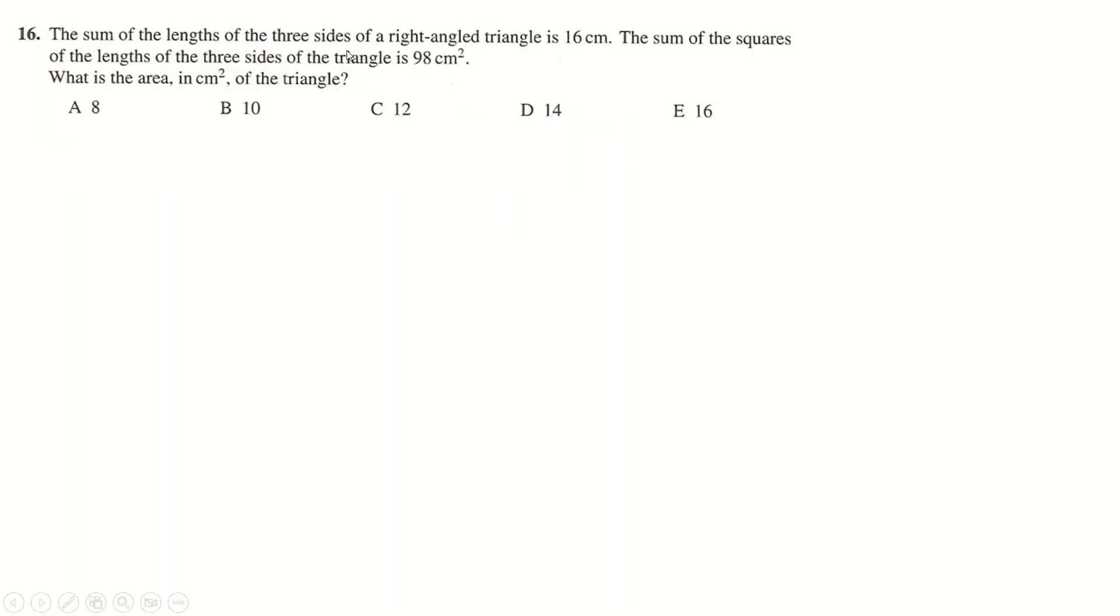Question number 16. We've got a right angle triangle where the perimeter is 16. And the sum of the squares of three sides, so a squared plus b squared plus c squared is 98. Now this is a right angle triangle, right? So a squared plus b squared is c squared, which means I can replace this a squared plus b squared with just c squared. To get 2c squared is 98, divided by 2 square root, and c is 7. Replace that in here to get a plus b is 9. And replace it in here to get a squared plus b squared is 49.